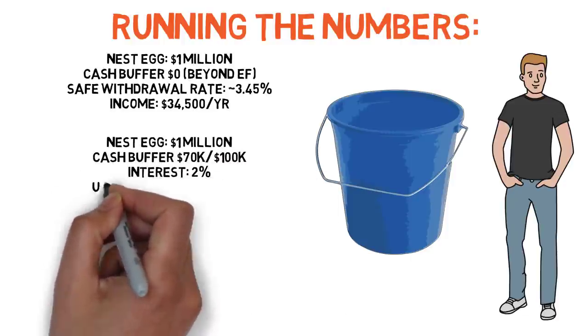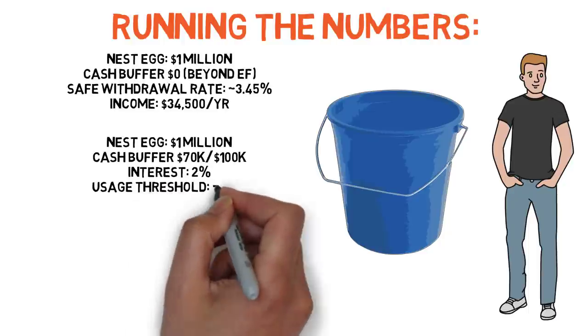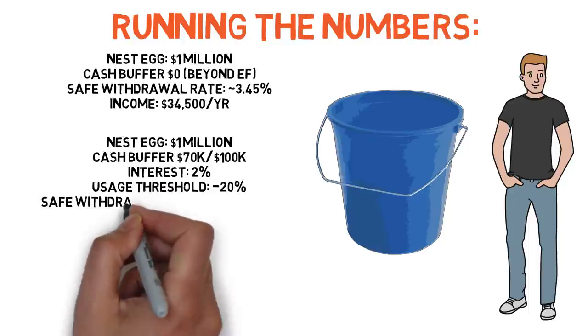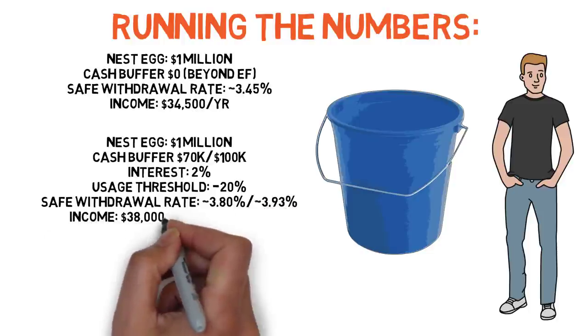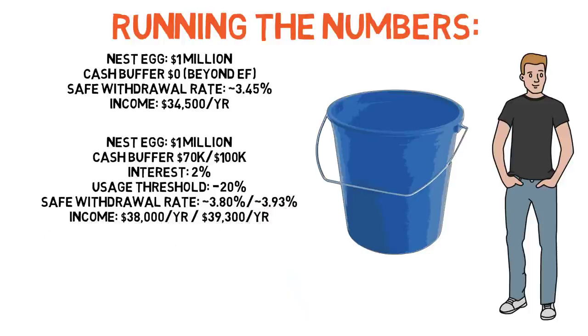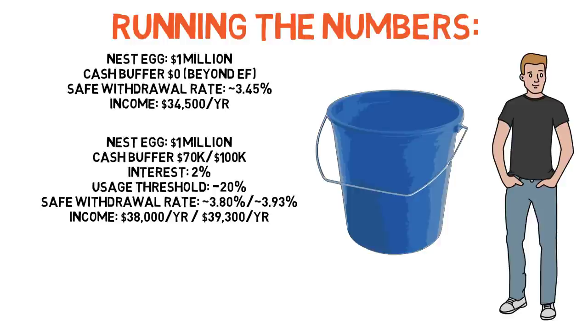He'll use the cushion to cover his expenses whenever his investments are at least 20% below all-time highs. If we run a simulation testing every starting year between 1927 and 1991, the last year for which we could get a full 30-year retirement period as of this writing, we see that with a two-year cash cushion, the minimum safe withdrawal rate for that same asset allocation jumps from 3.45% to 3.8%. With the three-year cushion, it rises to 3.93%.